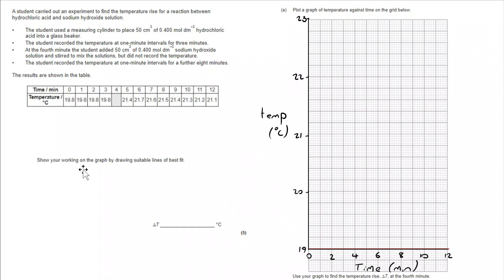Not only have I got the numbers on there, I've labelled and I've included units. Once I've got that, I can put my points on. There's all of my 19.8. And then after the reaction takes place from five minutes onwards, I've got all of the others.